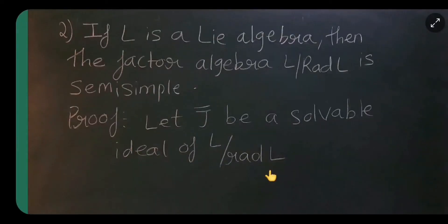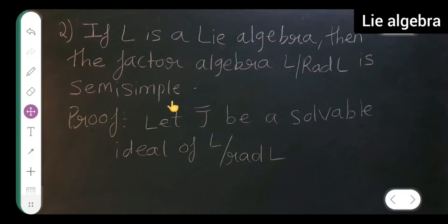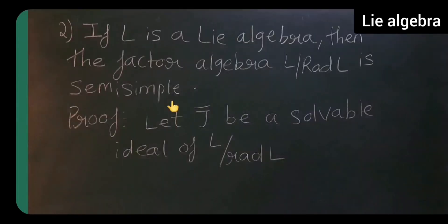The second lemma: if l is a Lie algebra then the factor algebra l by rad(l) is semi-simple. Recall the definition of semi-simple: let l be a non-zero Lie algebra, then l is said to be semi-simple if it has no non-zero solvable ideal, that is rad(l) = 0.